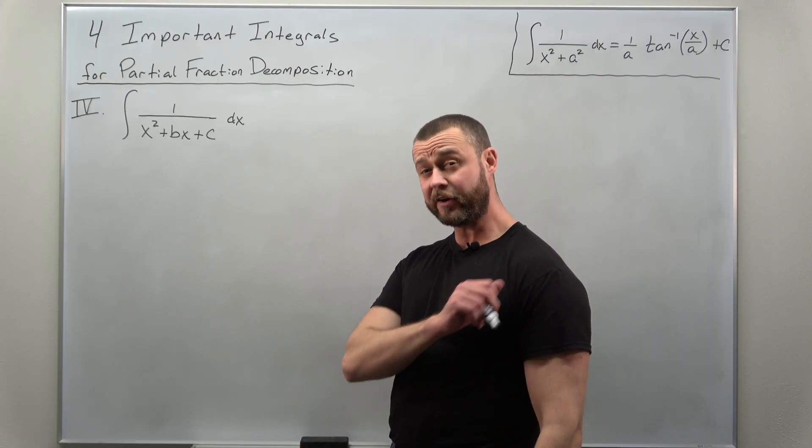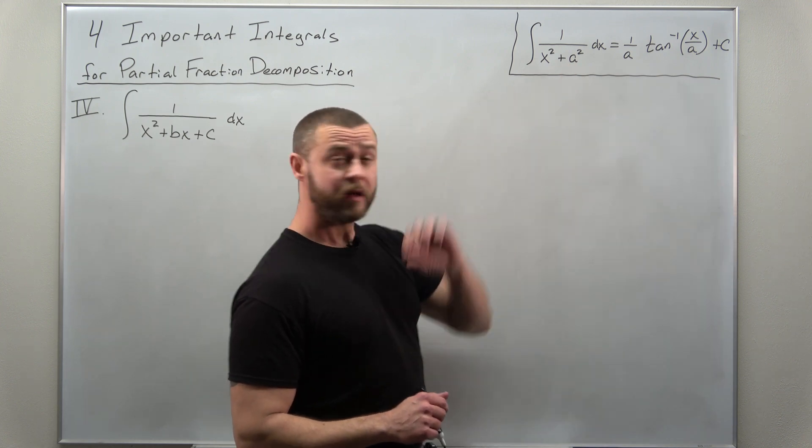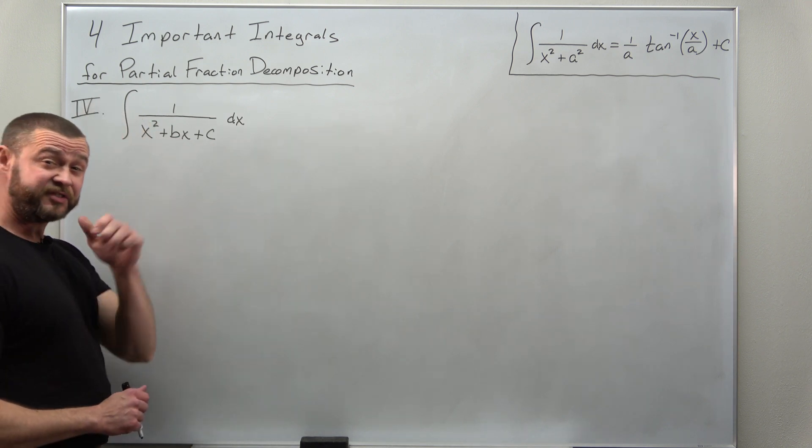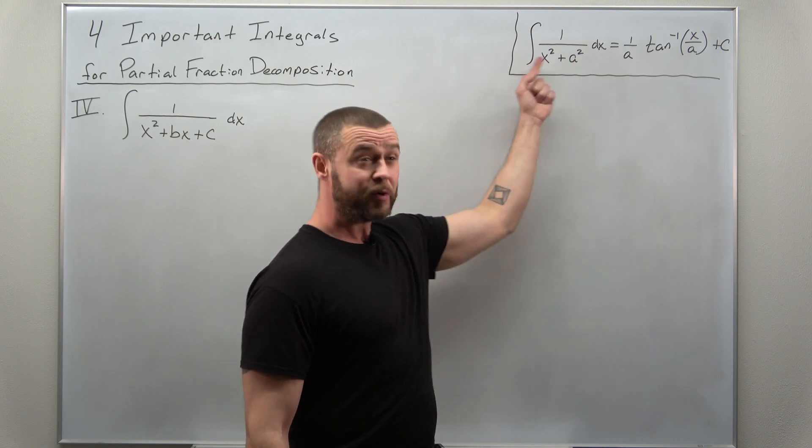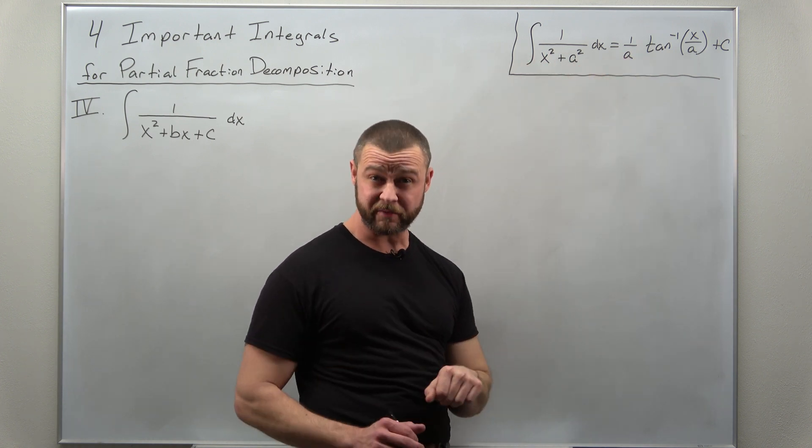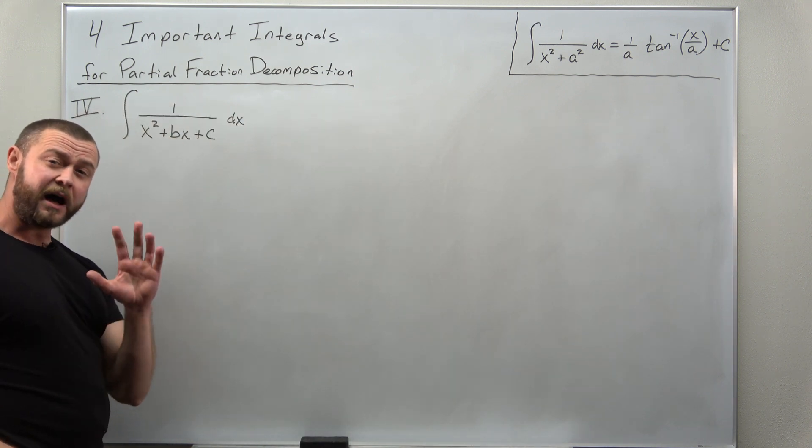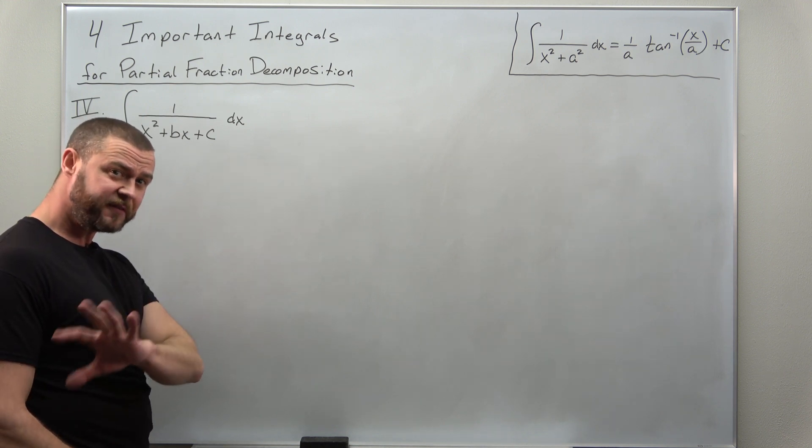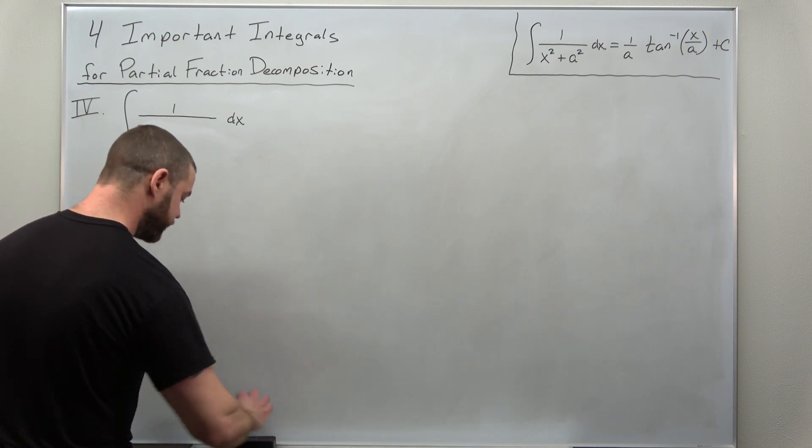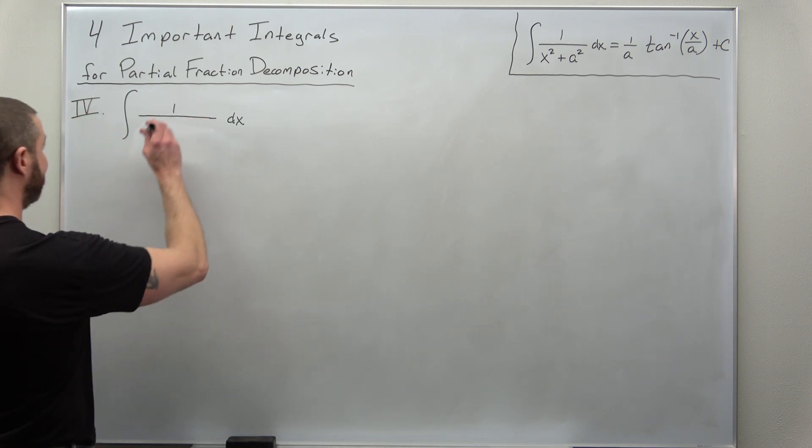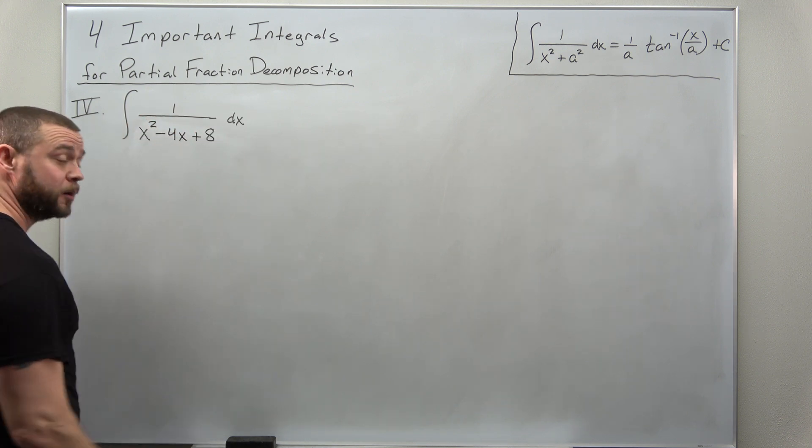Our fourth and final important integral is very similar to the third one, but the difference is there's an x in the denominator. Now, if there is no x, in other words, it's an x squared and a constant, we can apply this inverse tangent integration formula, no problem. But we have a factor of x. Now, let's turn this into a specific problem. So let's just have values here for b and c. Let's say as our example, we have the integral of 1 over x squared minus 4x plus 8.